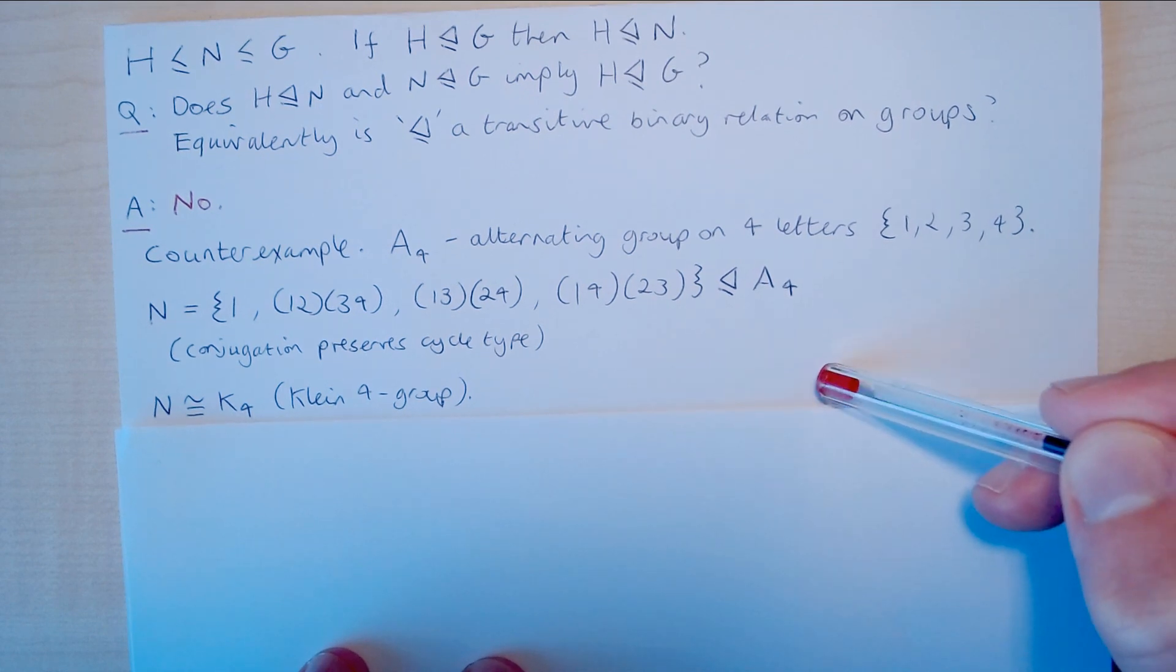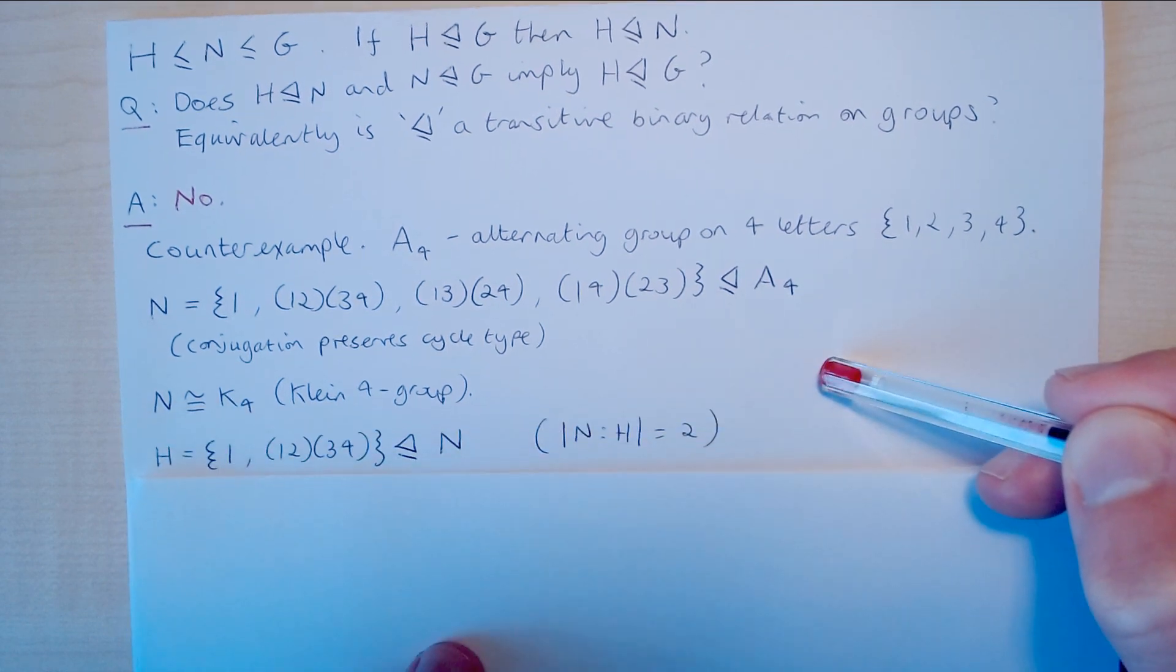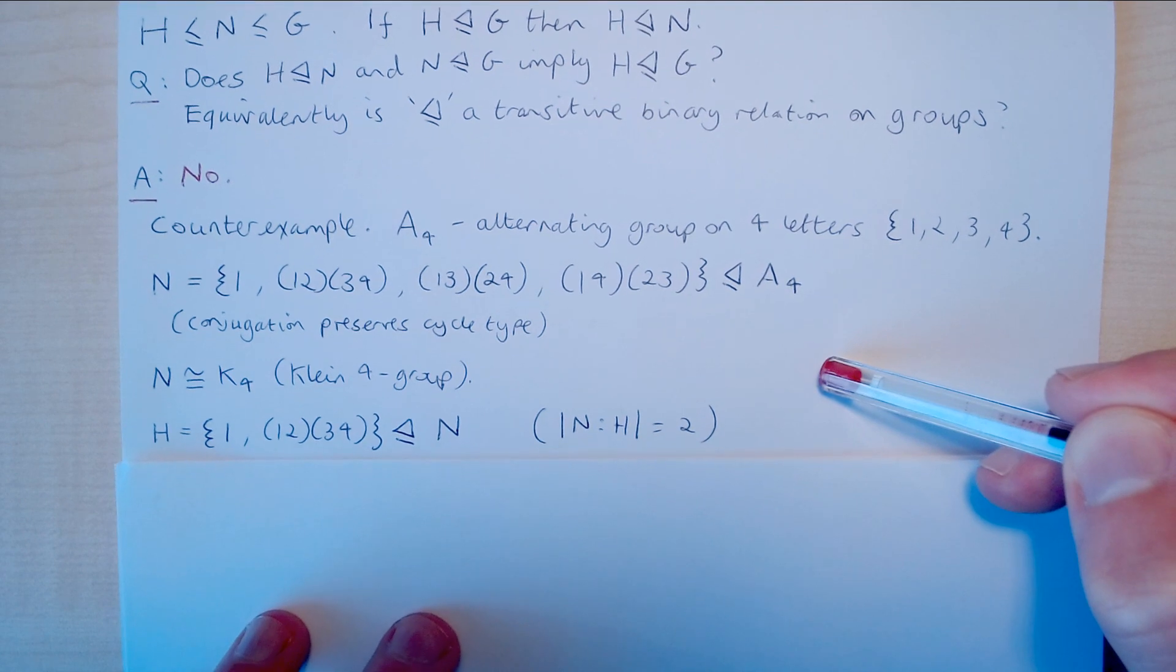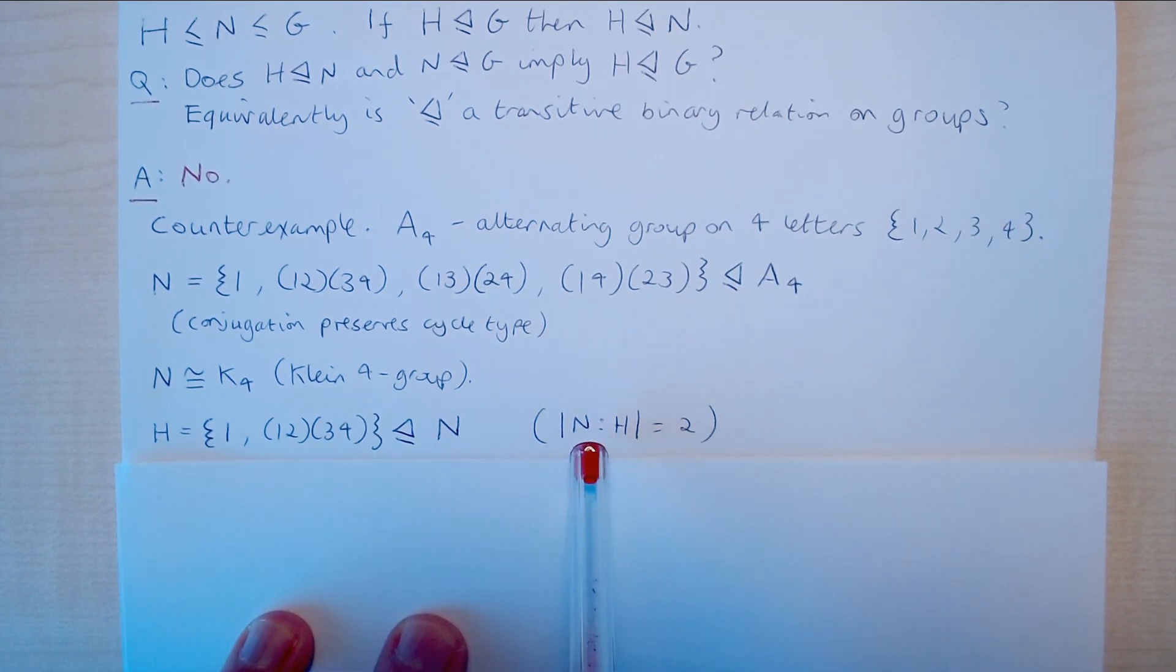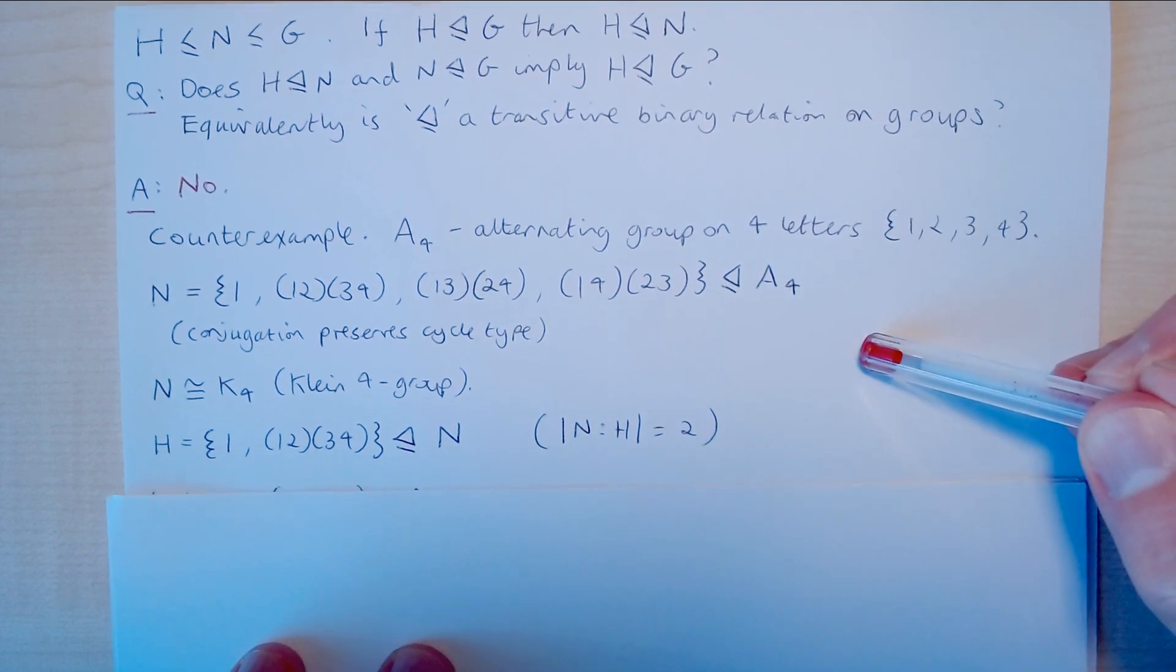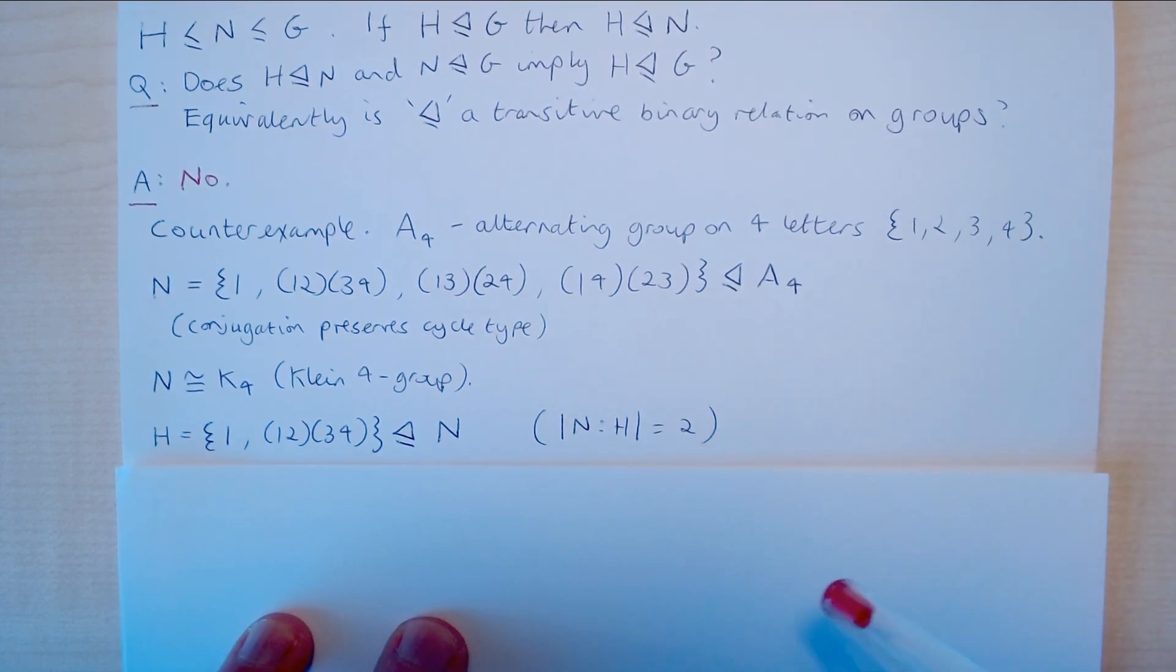N is actually isomorphic to a Klein 4 group. And if we consider this subset of N, H, consisting of the identity element and this single element here, we know that this is normal in N because the index of H in N is 2. Now the question is, is H a normal subgroup of A4?